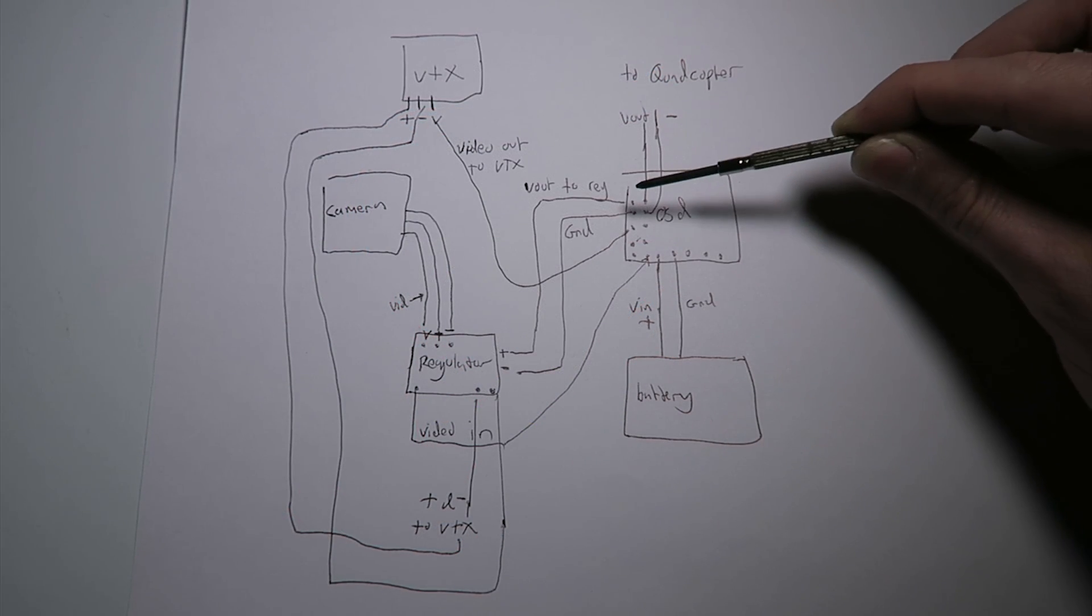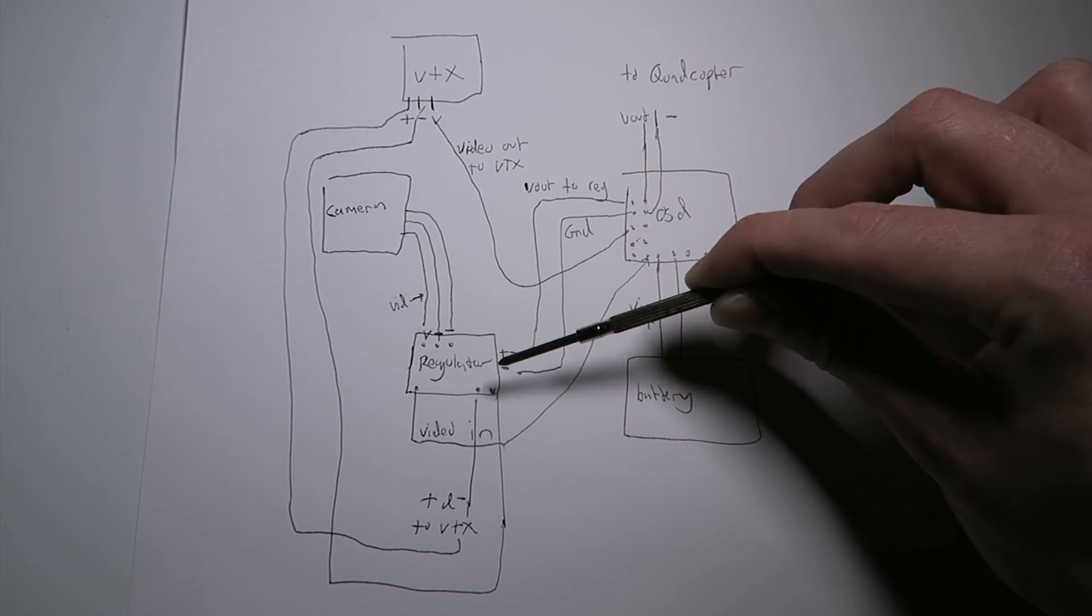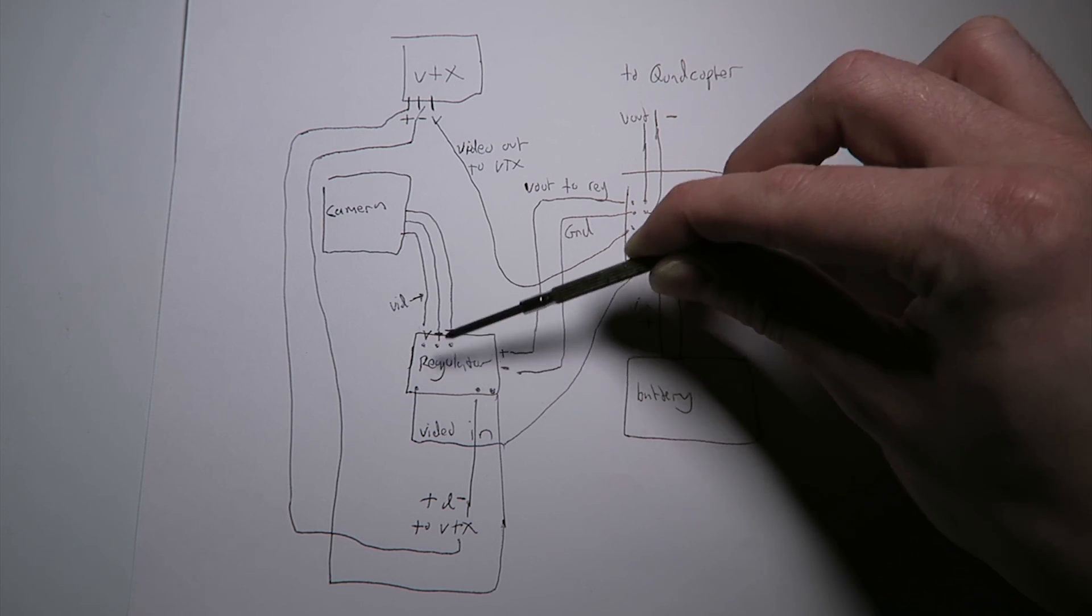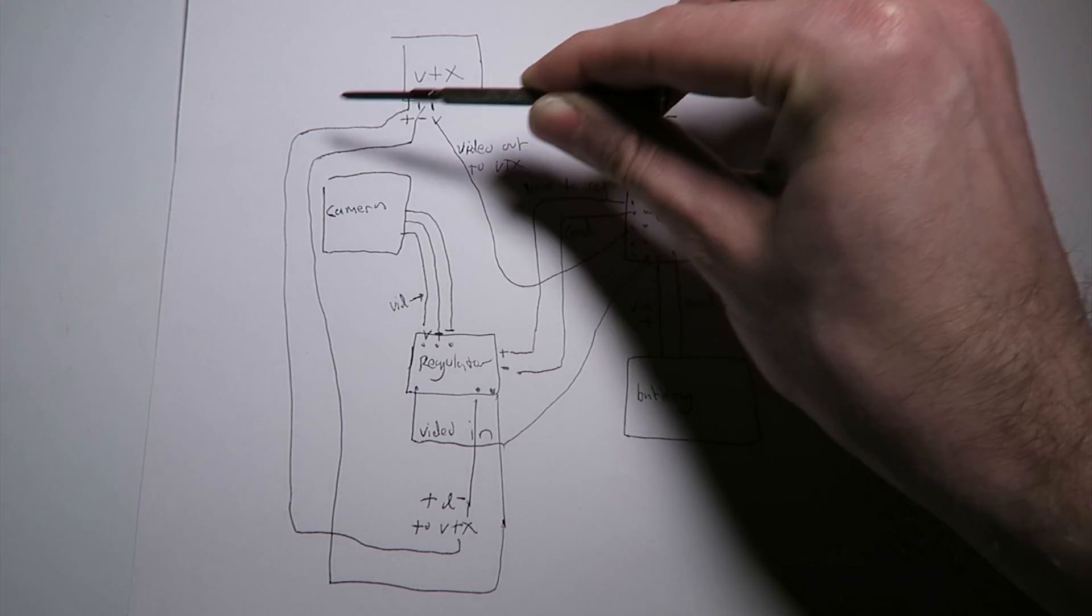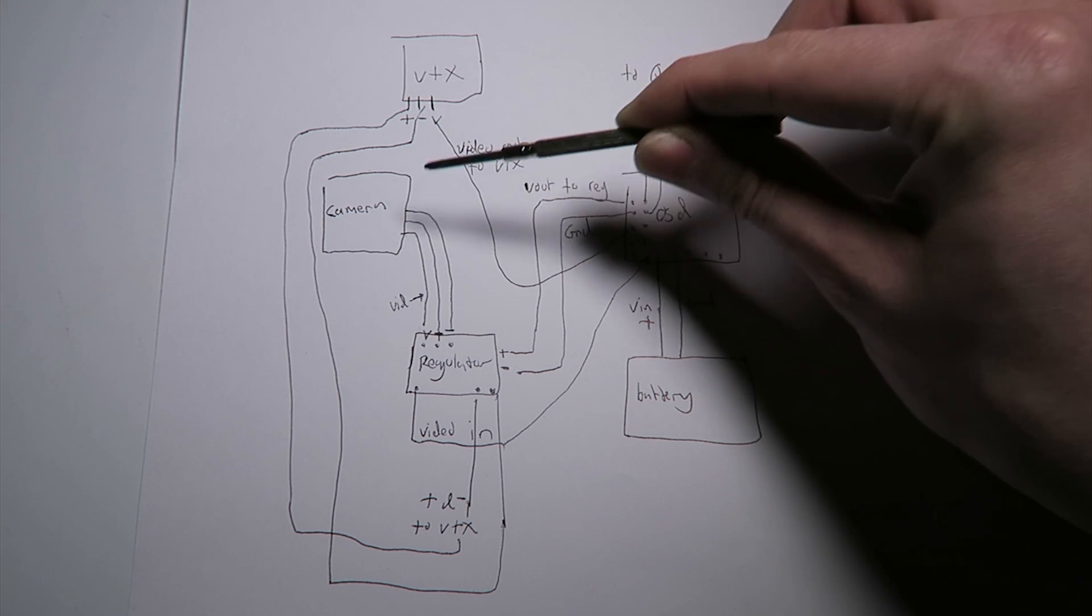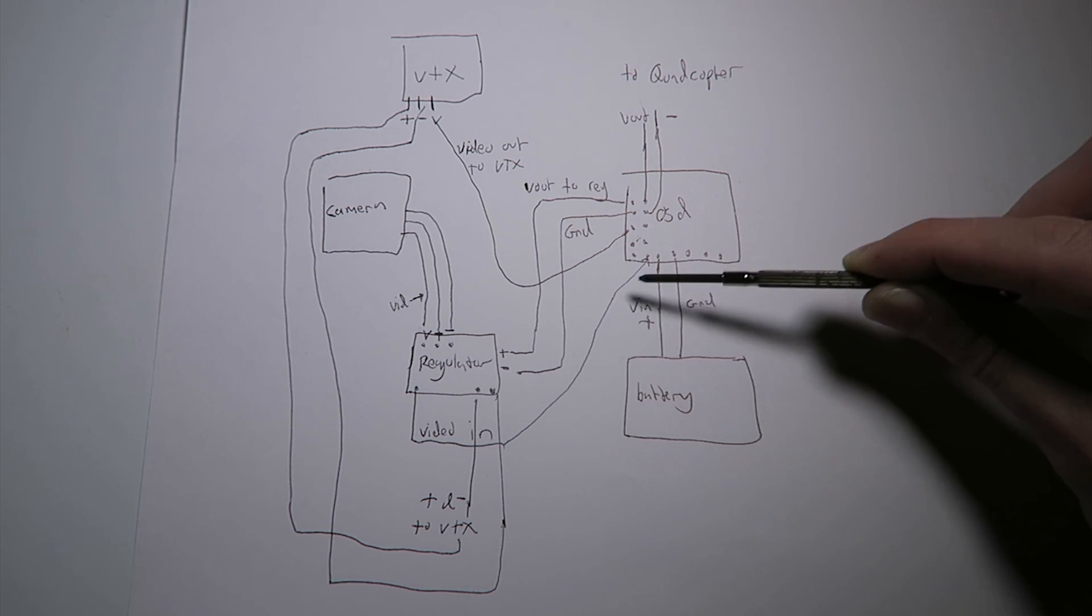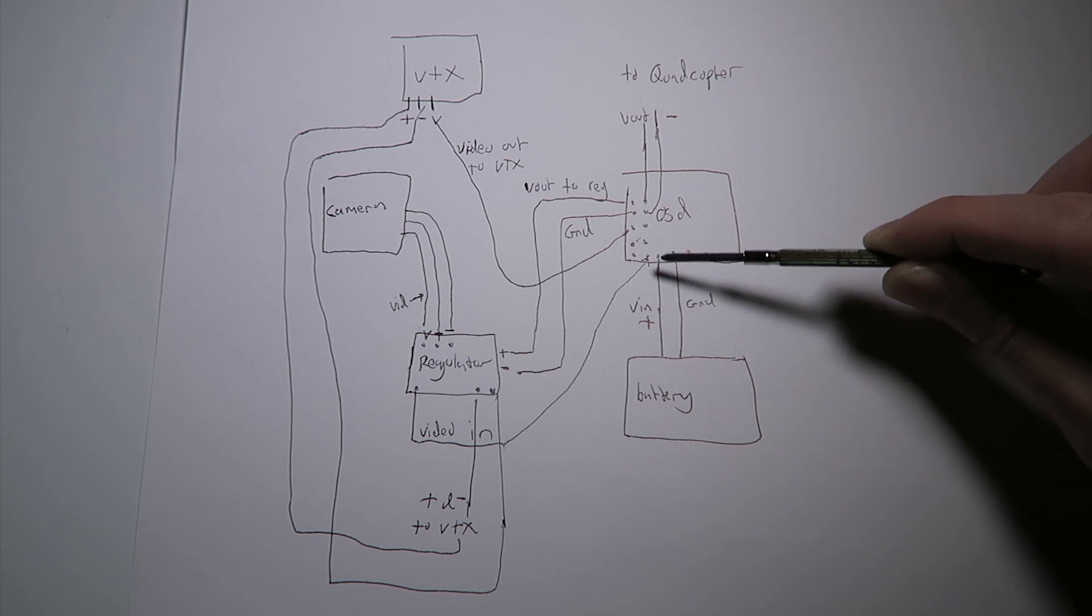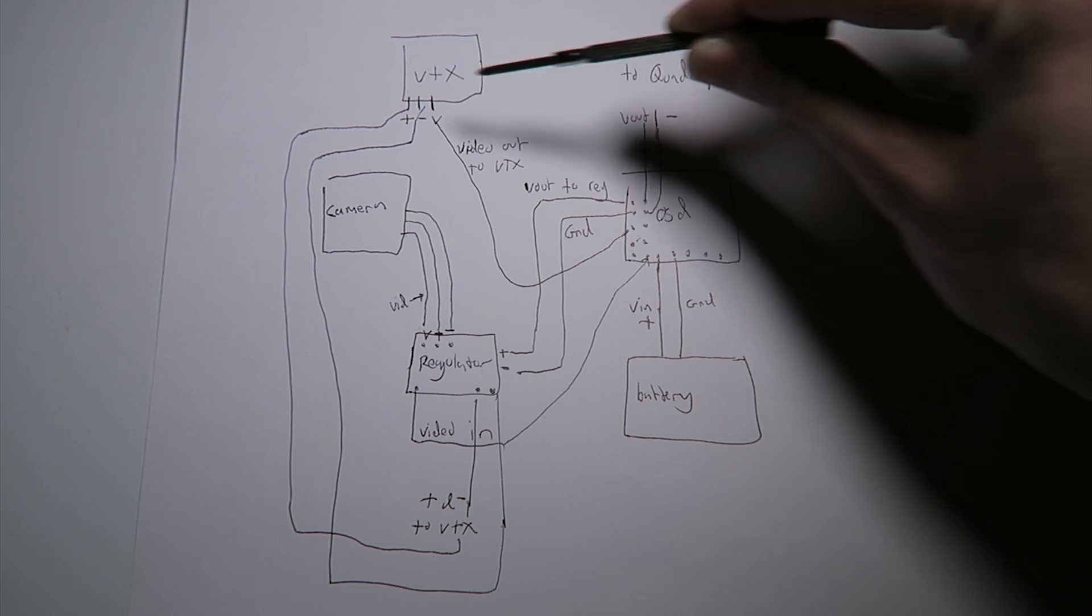The second voltage output, I have connected to the input of FPV Hobby's 5 volt regulator. From the regulator, I have got the 5 volts output, powering the camera and also my VTX. I have also routed the video through here as well, because it means I can feed the video through the video in on the OSD and feed it from the video out to the VTX quite easily.